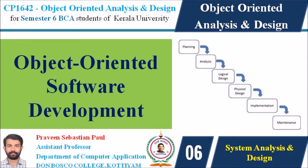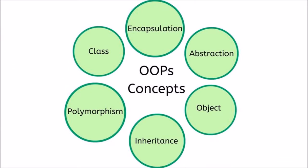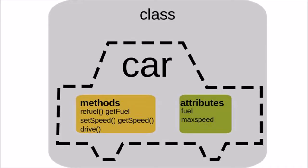Hi students, I am Pravind Sebastian Paul. In this lecture we are discussing the object-oriented software development concepts. OOSD is a simple way to develop software by building self-contained modules or objects that can be easily replaced, modified and reused. In an object-oriented environment, software is a collection of discrete objects that encapsulate their data as well as the functionality to model real-world objects.